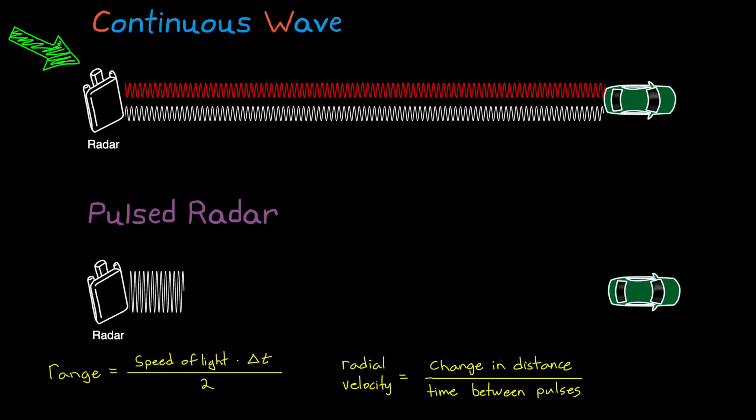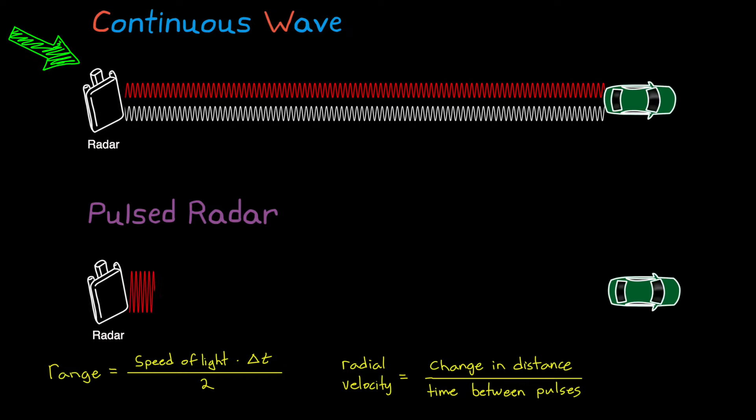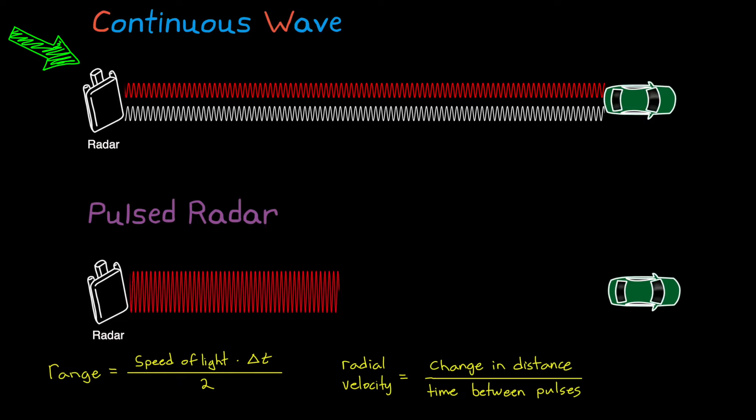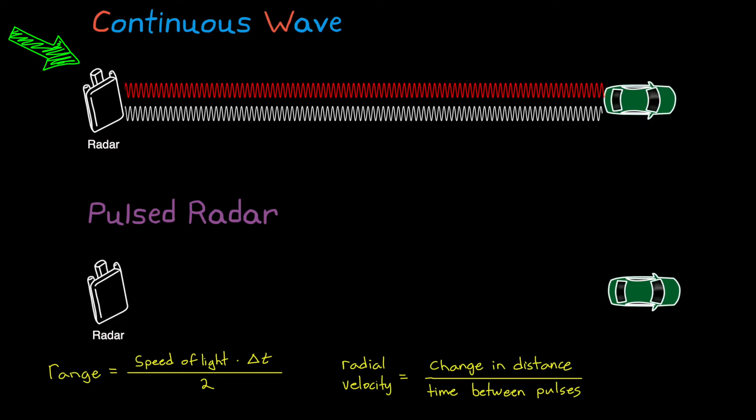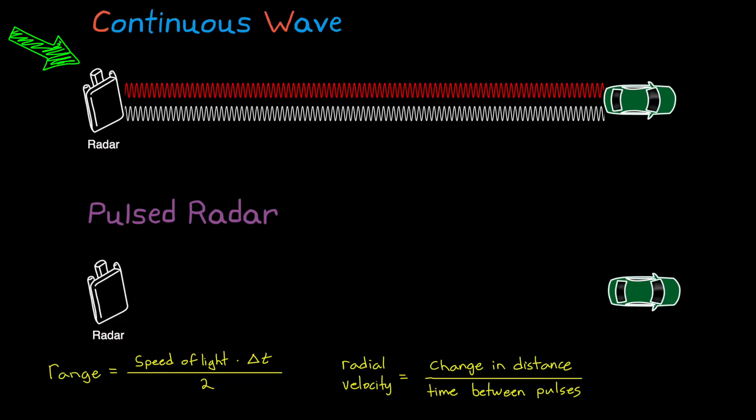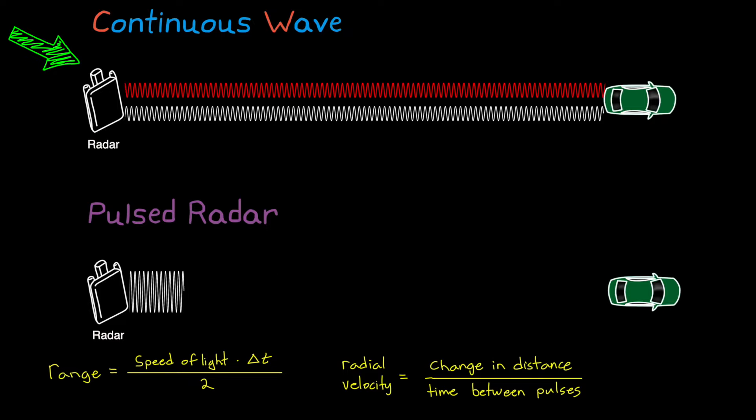On the other hand, getting these measurements isn't necessarily obvious with continuous wave radar since there is no start and end to a continuous signal that we can use to time how long it takes for the signal to travel the round trip distance. So why are we complicating matters by using continuous wave radar?